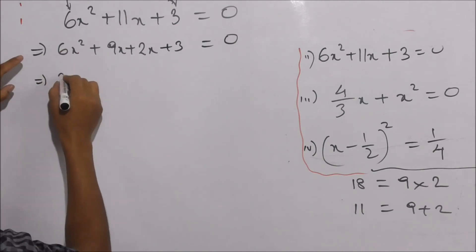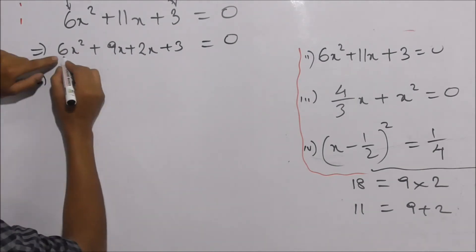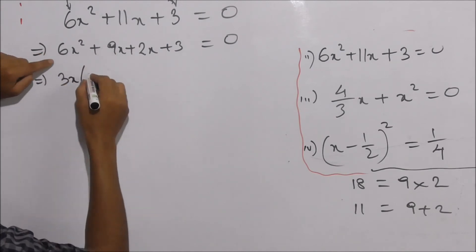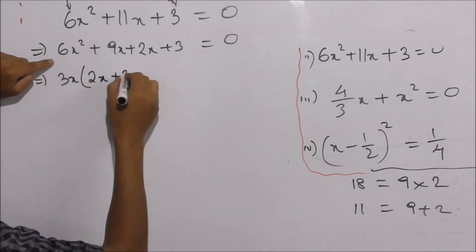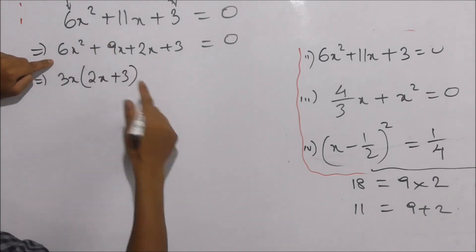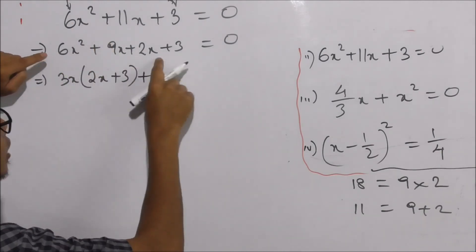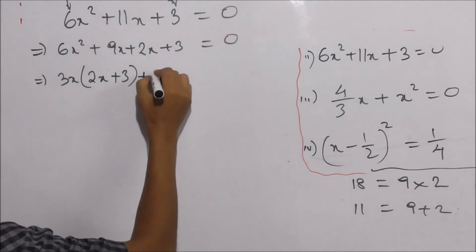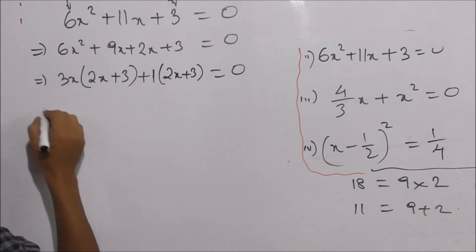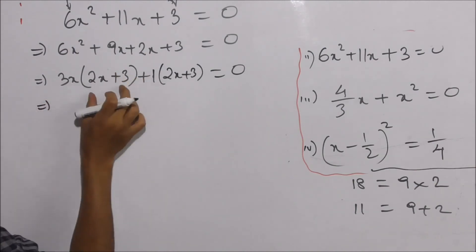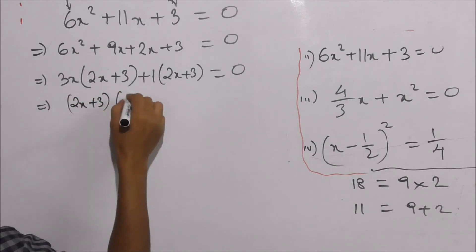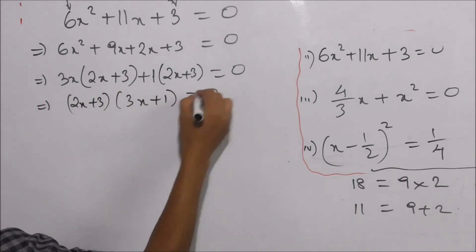Then take common factors: 3x(2x plus 3) plus 1(2x plus 3) is equal to zero. So (2x plus 3)(3x plus 1) is equal to zero.